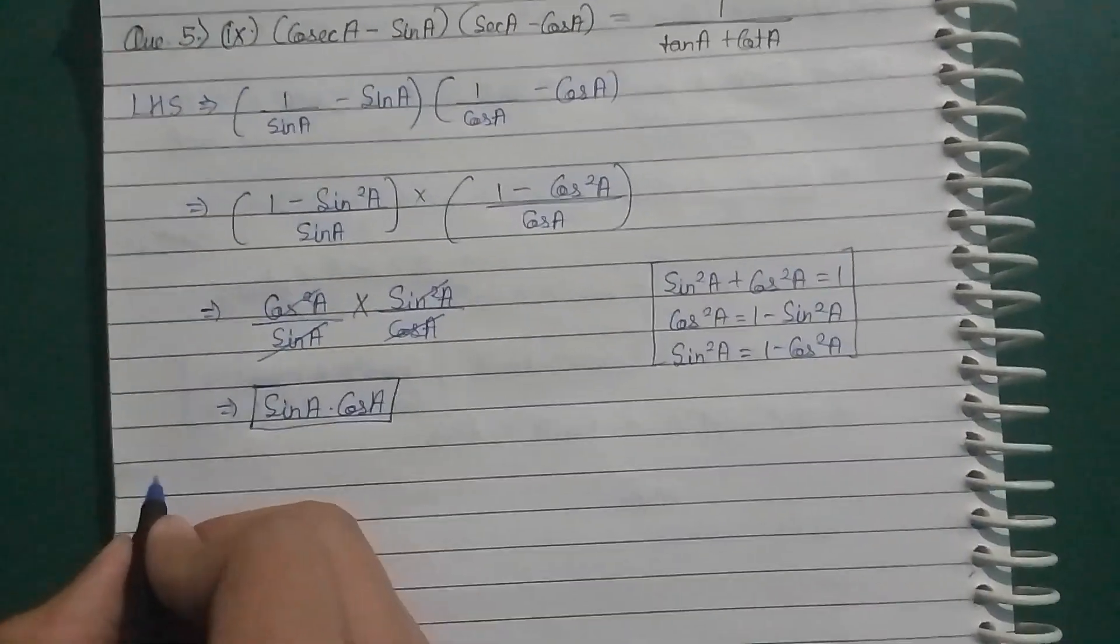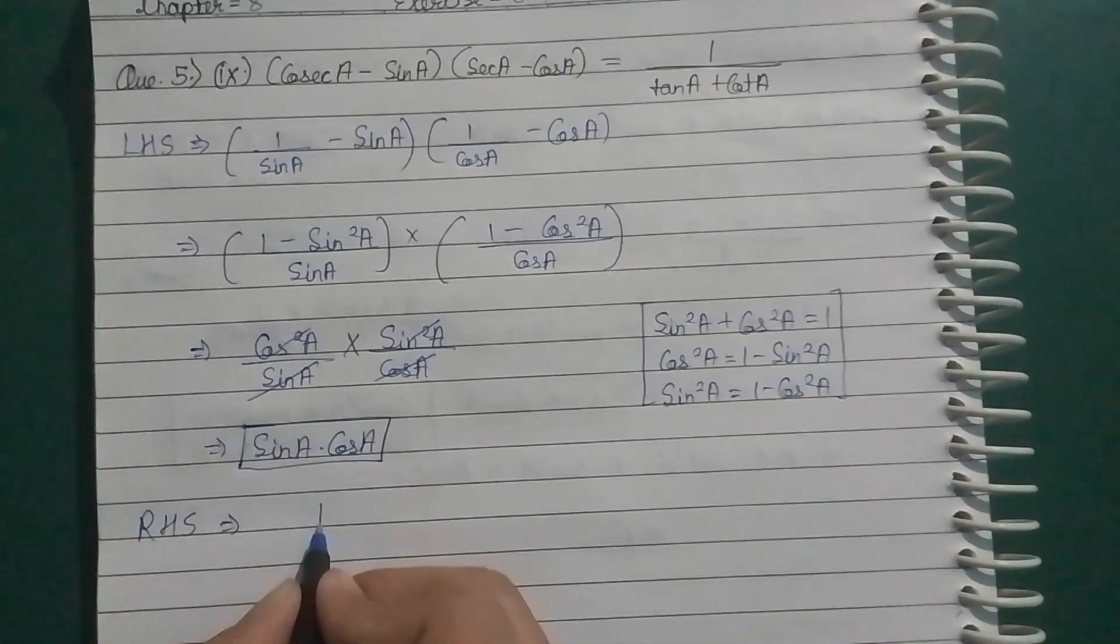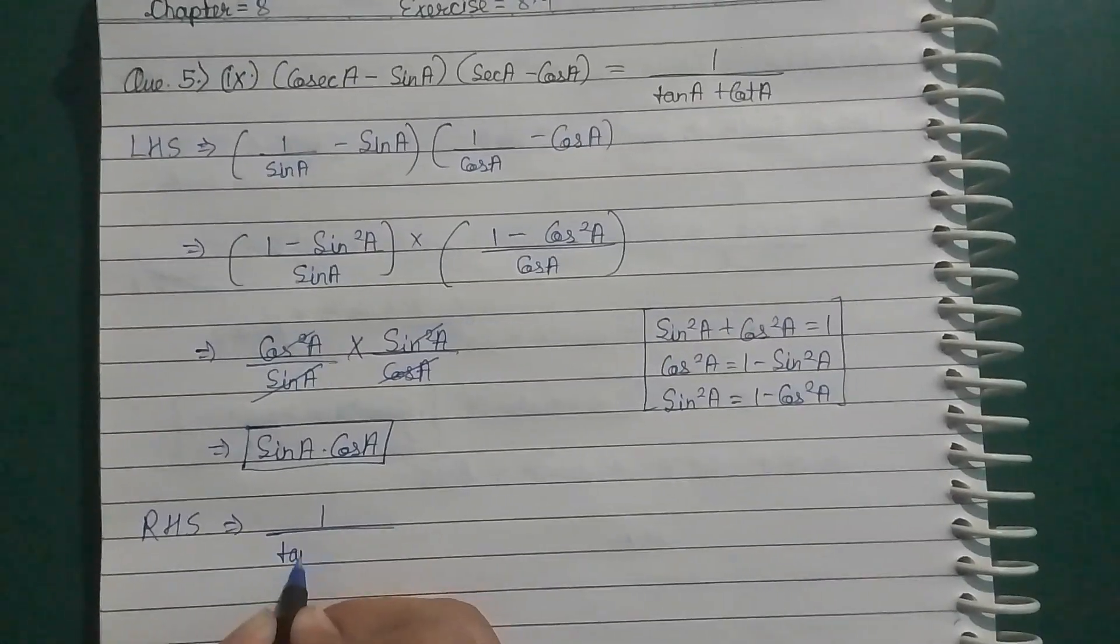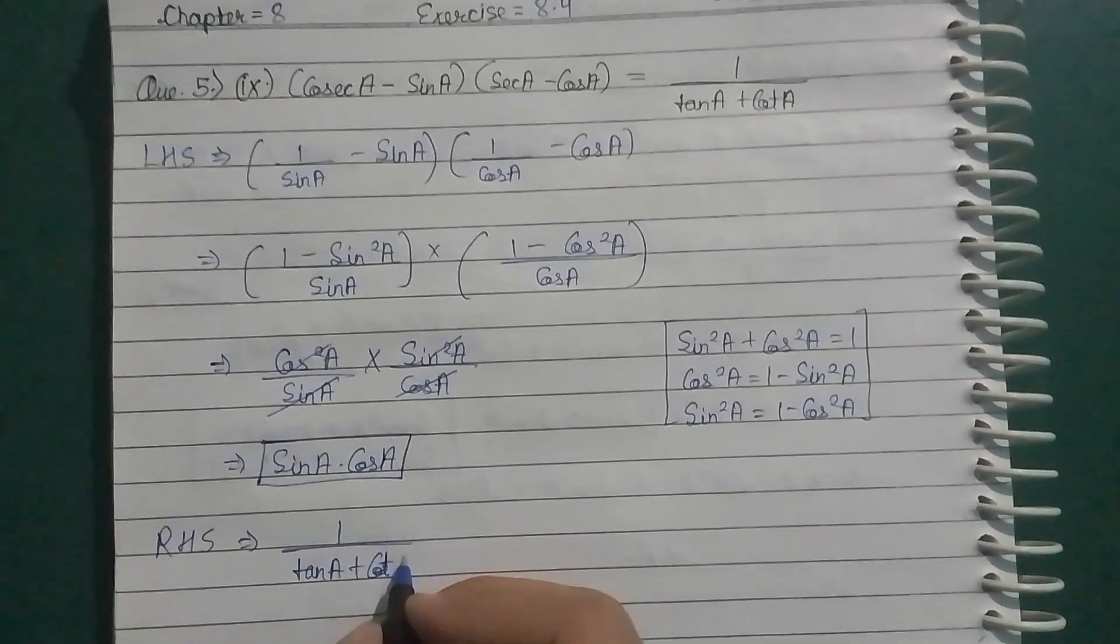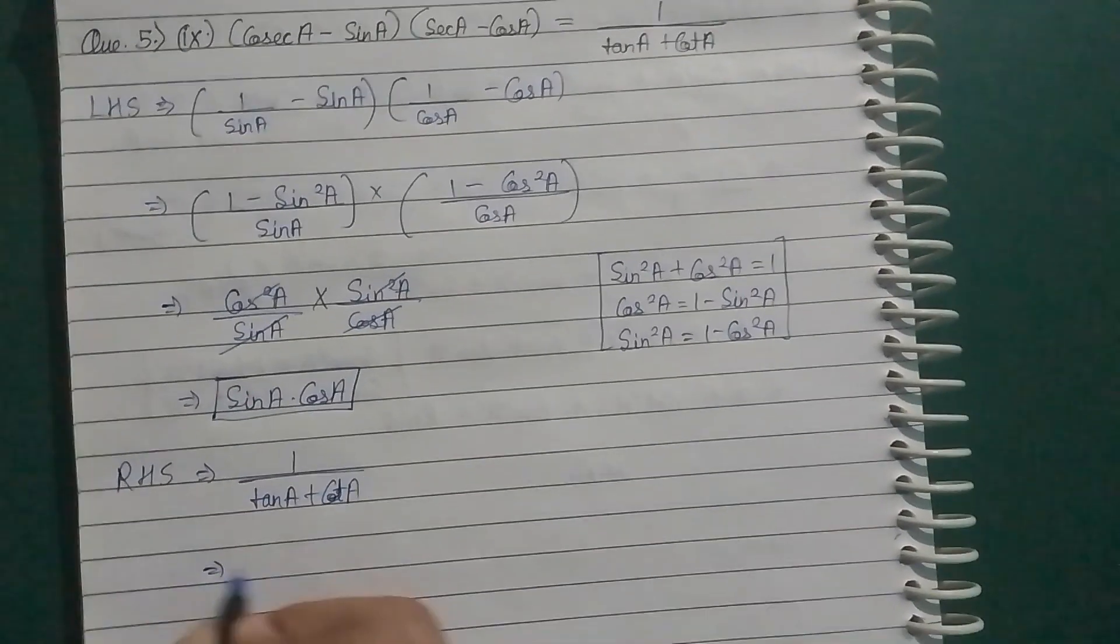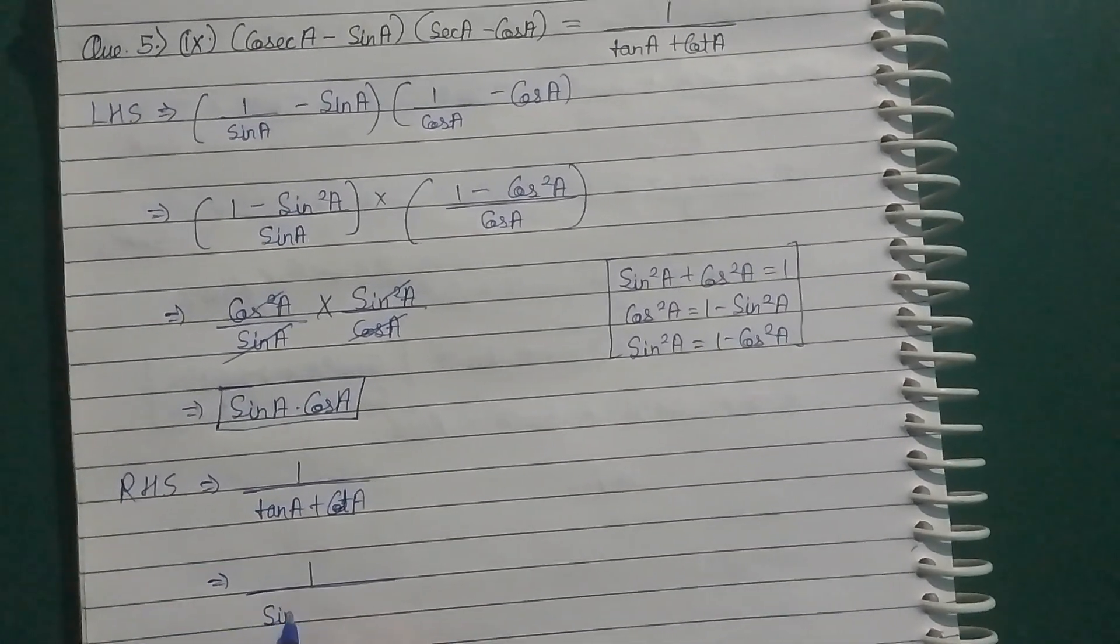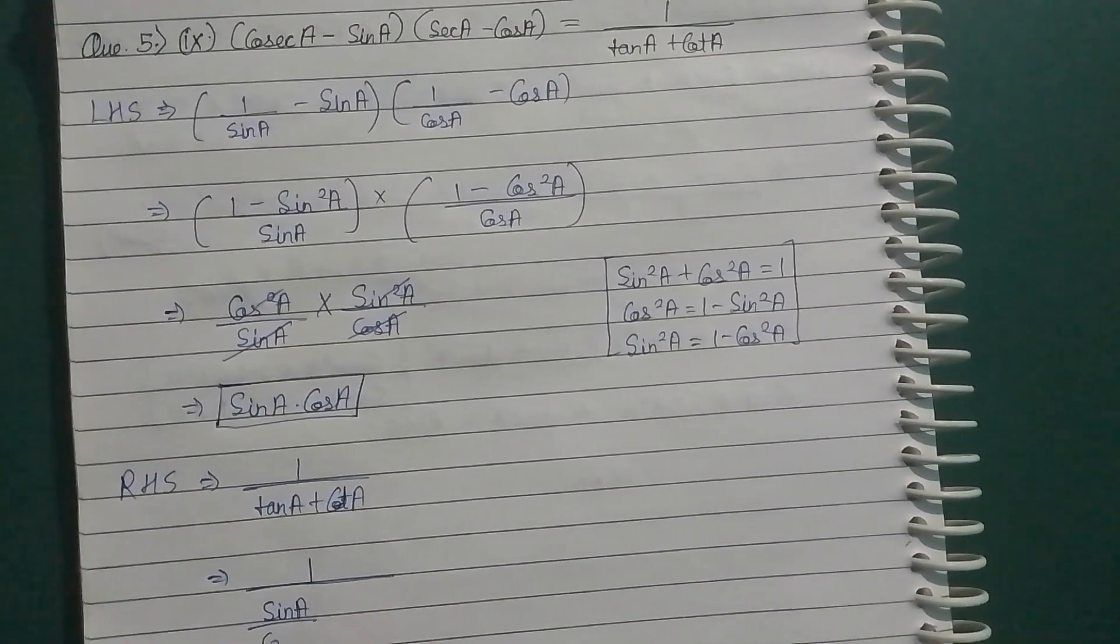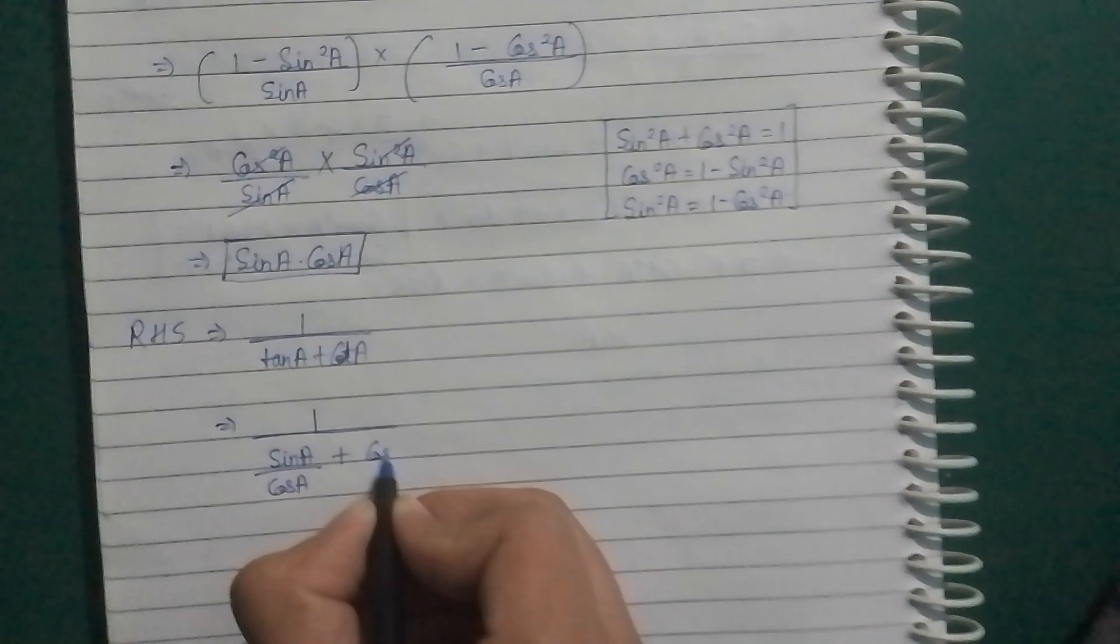Now we have to solve RHS. So coming to RHS, RHS has 1 by tan A plus cot A. Tan we can write as sin A by cos A, and cot we can write as cos A by sin A.